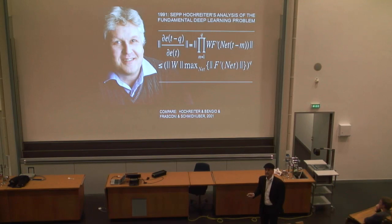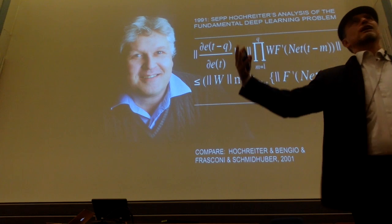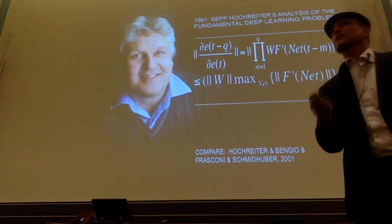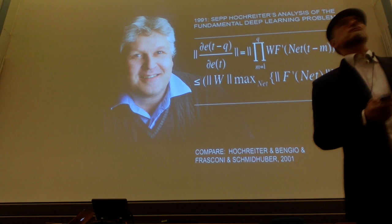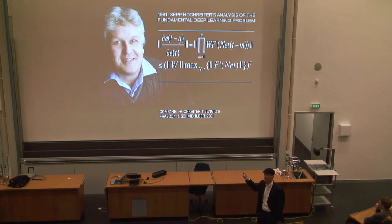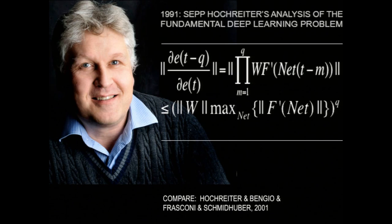By the end of the 1980s, it became clear that backpropagation does not really work well in deep networks with many layers, or in recurrent networks where you have to propagate signals far back in time. That was my first deep learning project — figuring out the reason for that. Sepp Hochreiter, my very first student, showed in his 1991 master's thesis why deep learning in deep networks doesn't work: the error signals, as you propagate them back, get smaller and smaller, decaying exponentially fast in the number of layers.